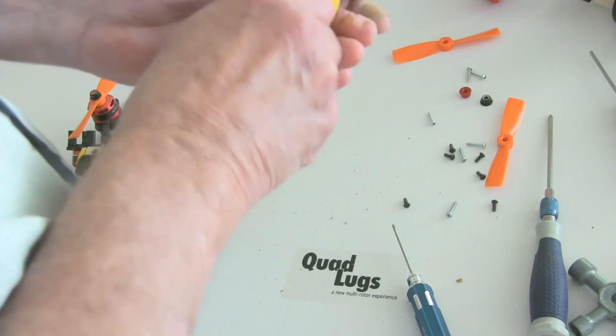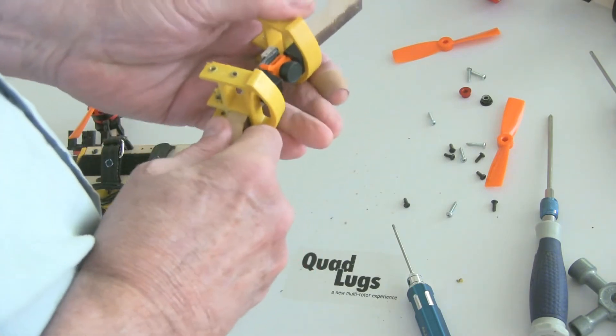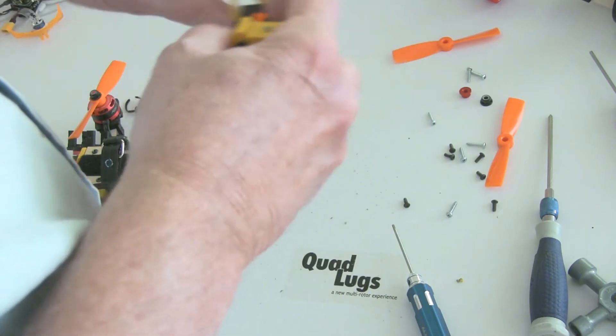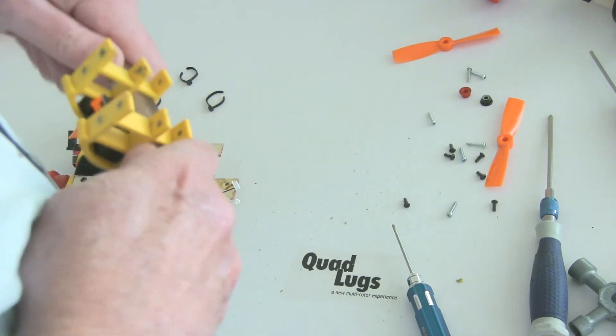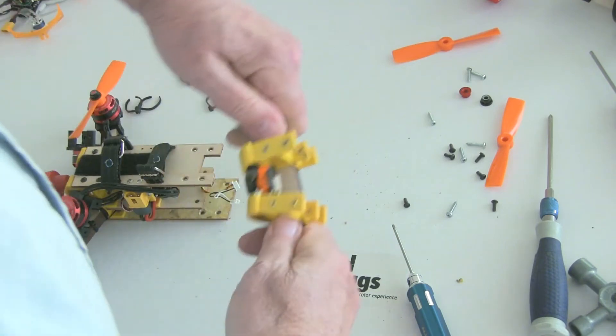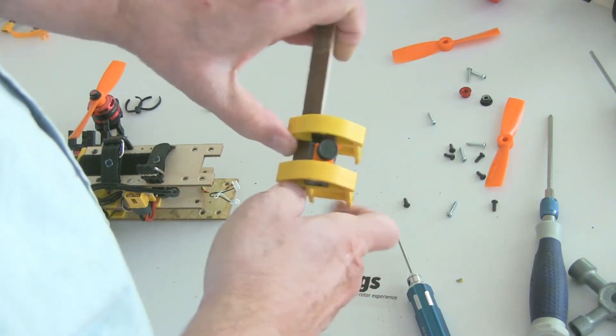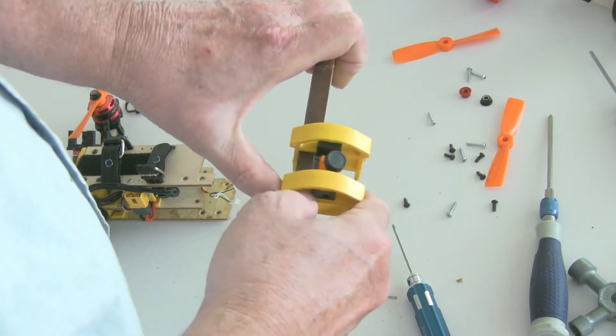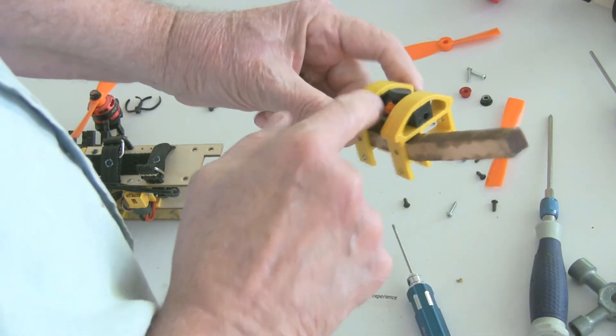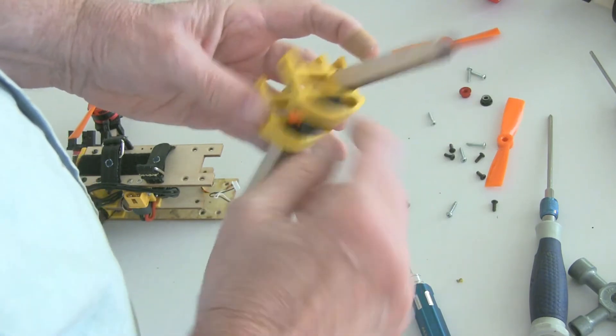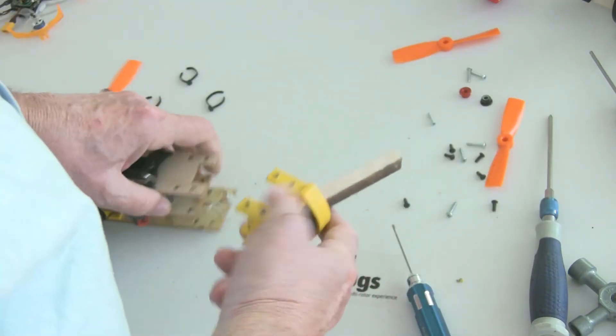Now we just took this all the way off. There we go. Put that back on. And the way we have these mounts works out pretty good. You can just take them out and put them right back in.